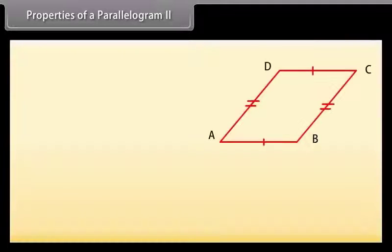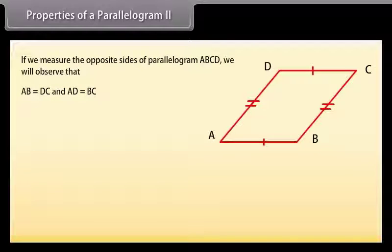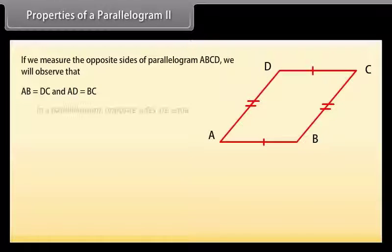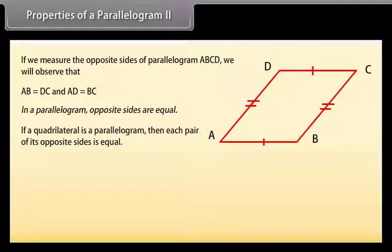Properties of a parallelogram 2: Since a diagonal divides the parallelogram into two congruent triangles, if we measure the opposite sides of parallelogram ABCD we observe that AB = DC and AD = BC. This is another property: in a parallelogram, opposite sides are equal. This theorem can also be stated as: if a quadrilateral is a parallelogram, then each pair of its opposite sides is equal.